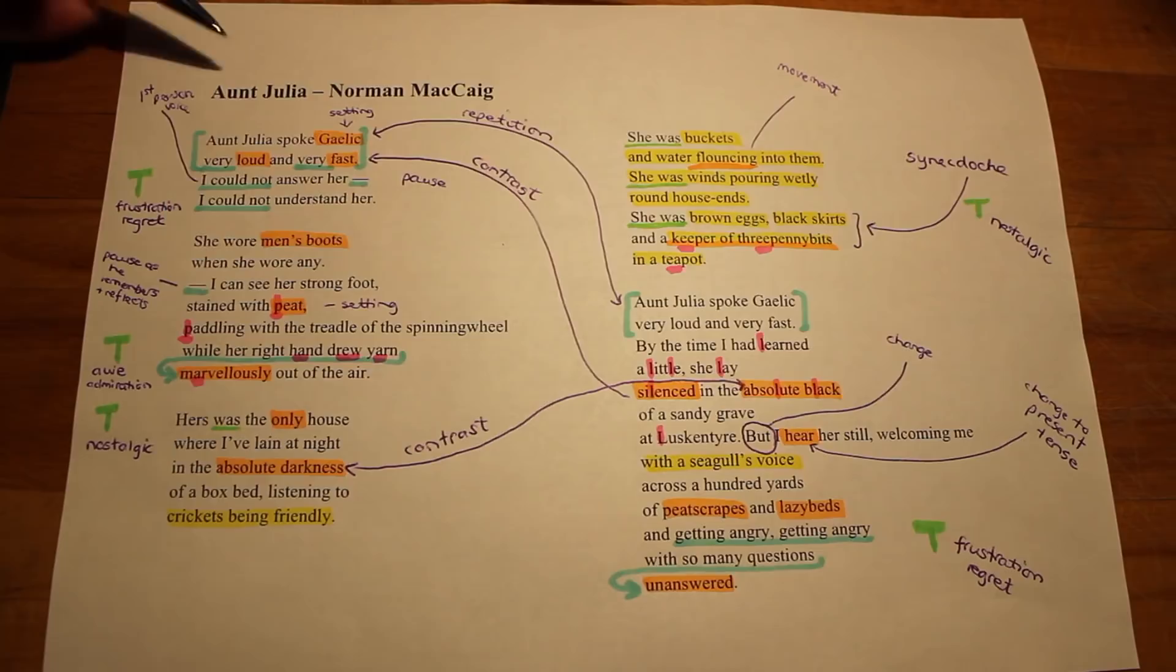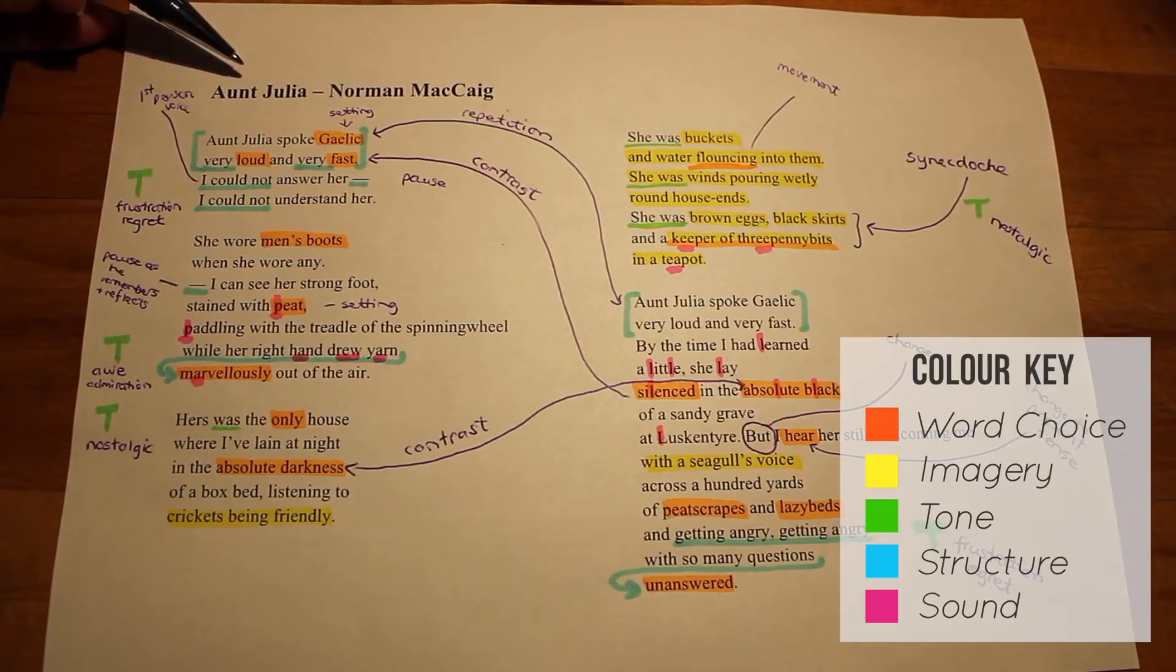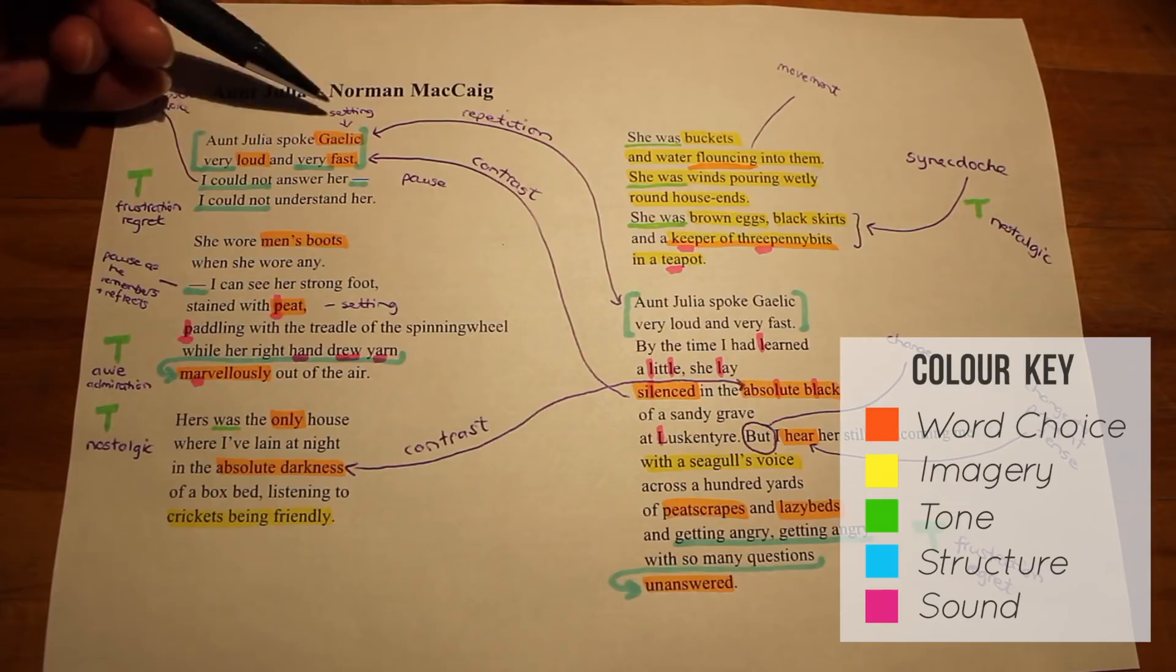The title of the poem immediately introduces us to the subject, Aunt Julia, and immediately we're told in the first stanza a bit about Aunt Julia. Aunt Julia spoke Gaelic, very loud and very fast.